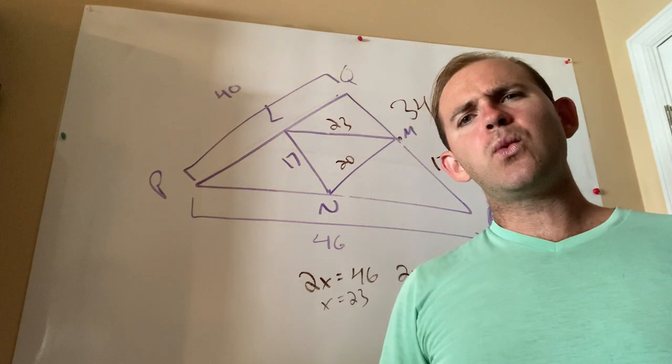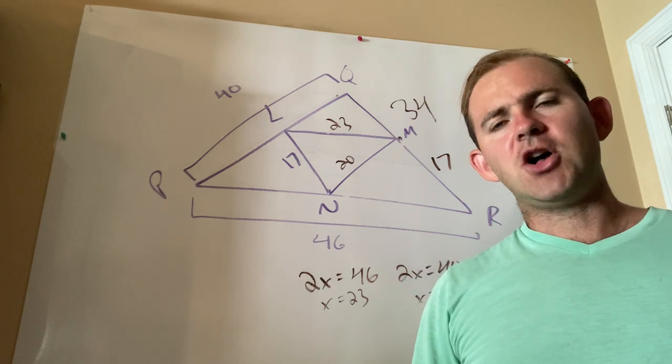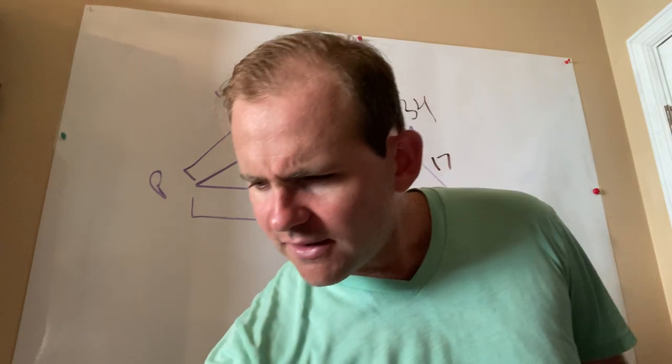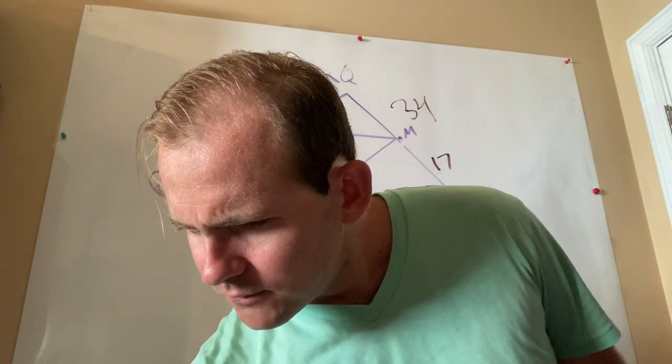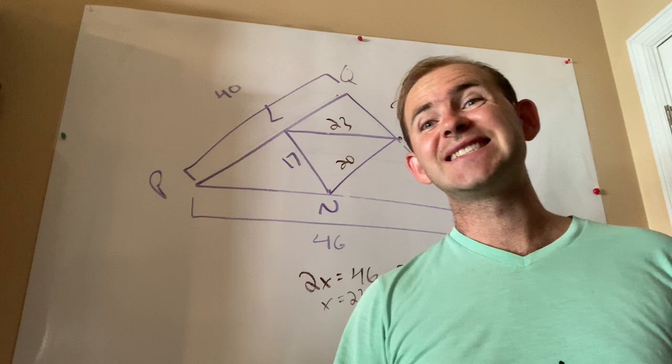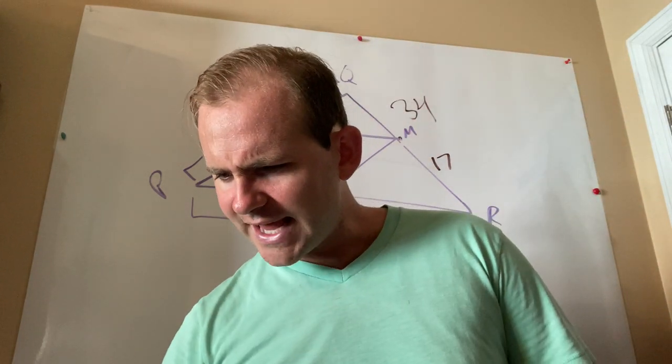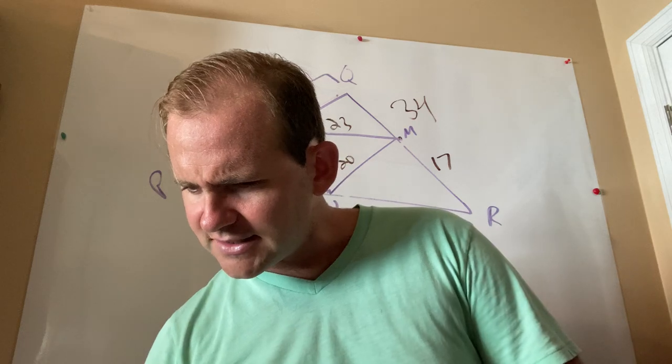All right, so that's one way you may see this kind of problem on a unit test. More commonly, though, especially on an EOC-level problem, would be something like example number 6. So let's take a look together at example number 6 and see what this is all about.